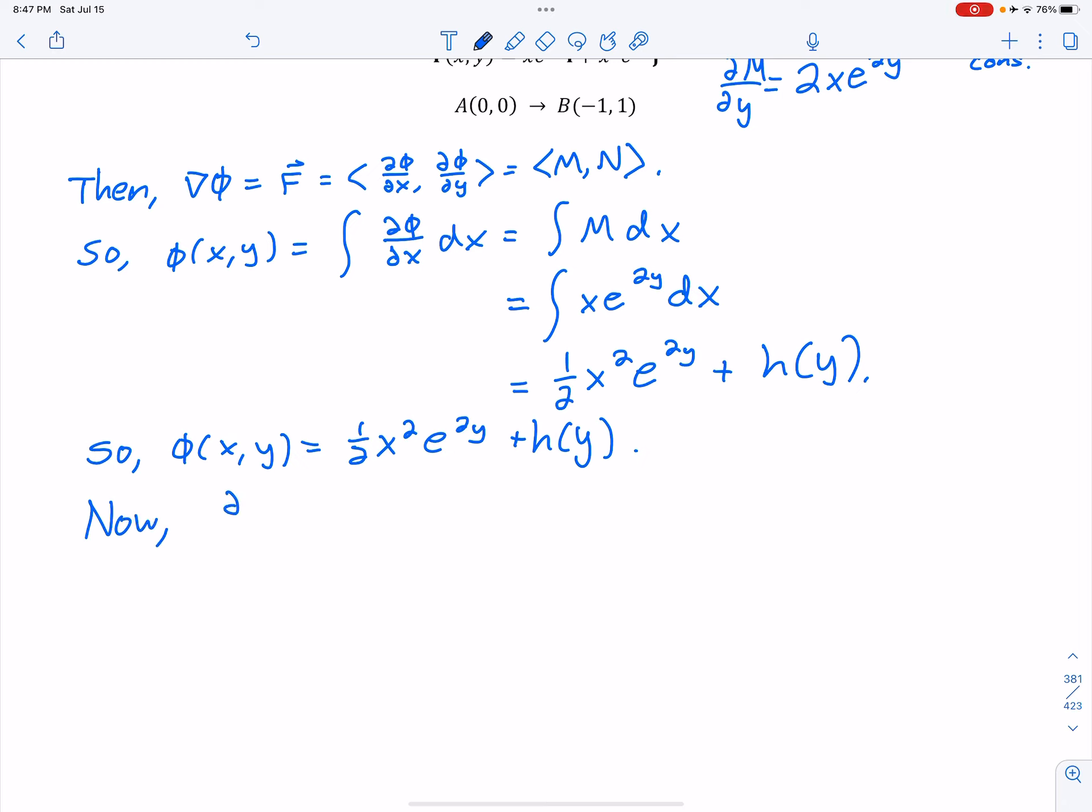Now, we can take partial of phi with respect to Y, and we just do it with that function there. The 2 out of that E, 2Y, that's the only function there, everything else is a constant. The 2 comes out, cancels with that 1 half, leaving me with X squared, E to the 2Y, plus H prime of Y.